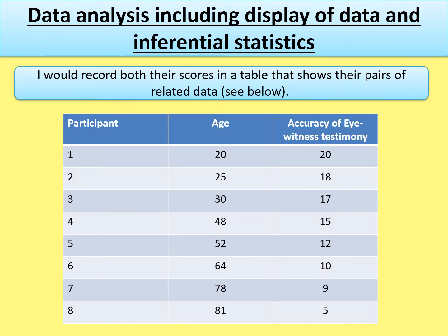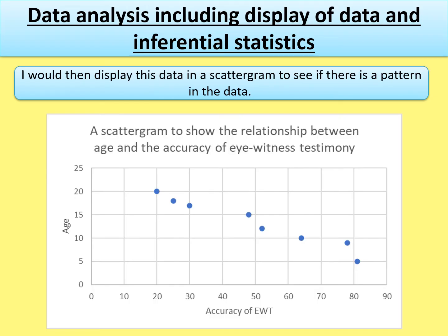The last bullet point covers data analysis including display of data and inferential statistics. For display of data, record both scores in a table showing pairs of related data — draw a table with participant numbers down the side and the co-variables — age and accuracy of eyewitness testimony score — as column headings. You can fill in some data rows; you'll notice the younger the participant, the better the score, reflecting a negative correlation. You can draw an arrow to indicate there would be more rows for additional participants.